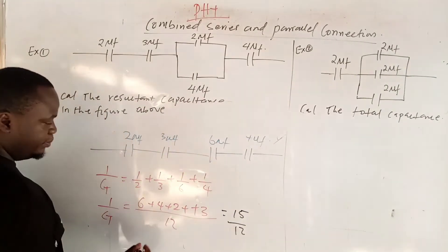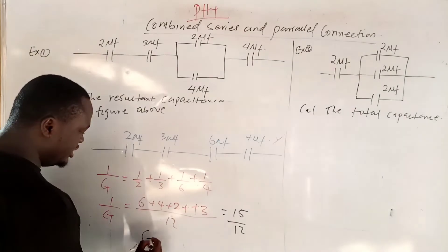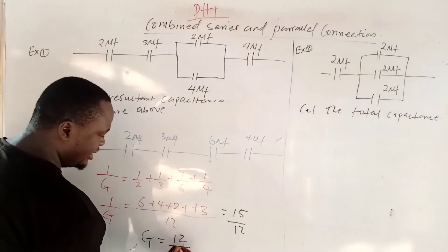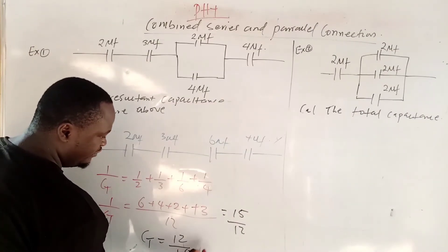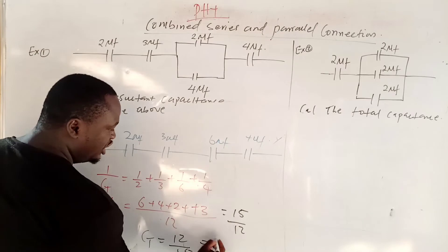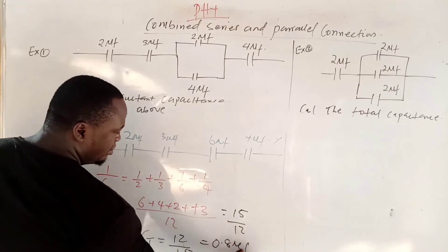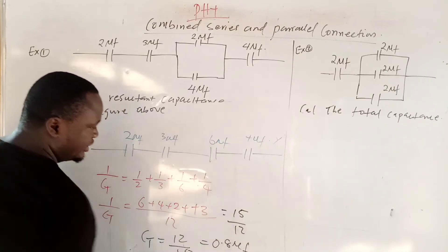By cross-multiplying, your CT will now be the inverse: 12 divided by 15, which gives you 0.8 microfarad.